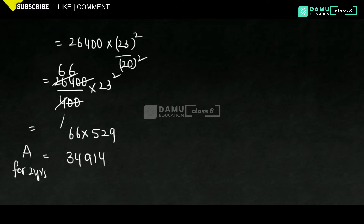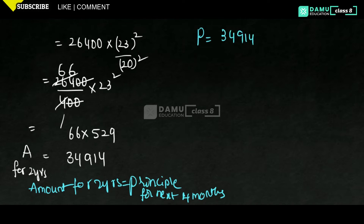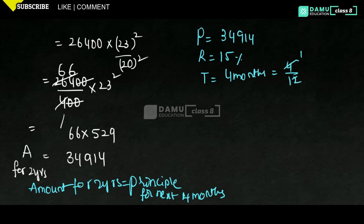Now we calculate the amount after 2 years 4 months. The amount for 2 years, 34,914, becomes the new principal for the next 4 months. Since 4 months is less than 1 year, we use simple interest. Converting 4 months to years: 4/12 = 1/3 years.